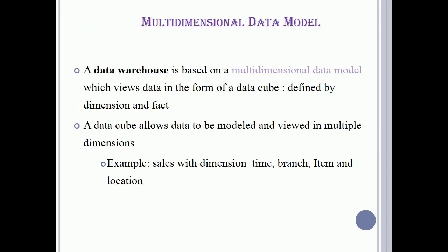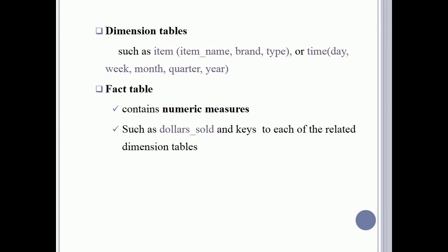A data warehouse is based on a multi-dimensional data model which views data in the form of a data cube, defined by dimensions and facts. A data cube allows data to be modeled and viewed in multiple dimensions — for example, sales with dimensions: time, branch, item, and location. Dimension tables such as item (item_name, brand, type) or time (day, week, month, quarter, year) describe the dimensions. The fact table contains numeric measures such as dollars_sold and keys to each of the related dimension tables.